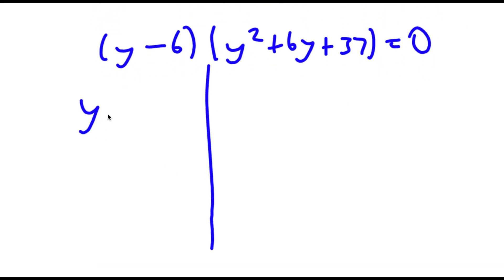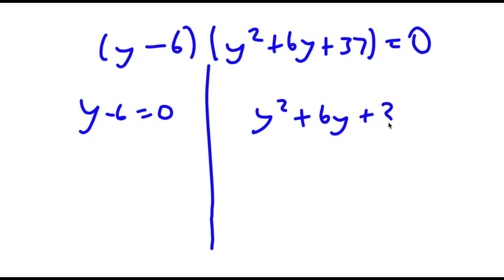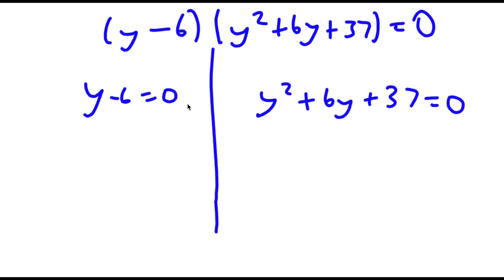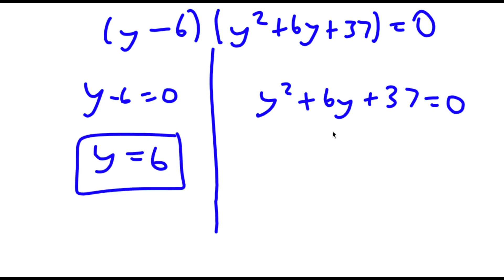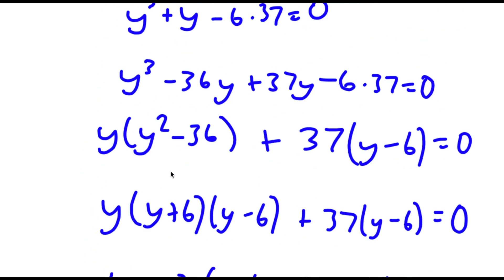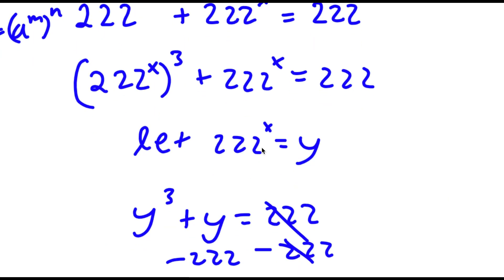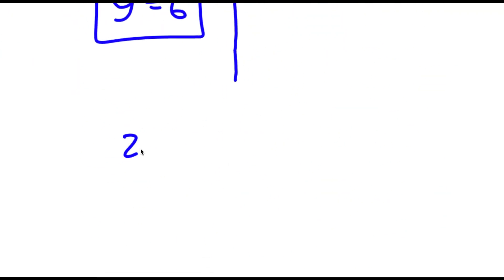So this gives me y minus 6 equals 0, and y² plus 6y plus 37 equals 0. For y minus 6 equals 0, y is equal to 6. For y² plus 6y plus 37 equals 0, there is actually no real solution, because if you plug this into the quadratic formula, you get the square root of a negative number. So y equals 6 is my only solution, and remember we let 222 to the power of x equal y, so 222 to the power of x is equal to 6.